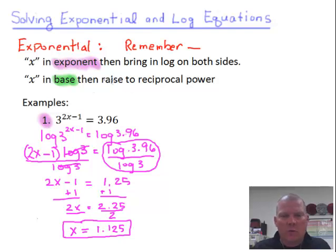Now, I want to teach you another way of working this problem out. And I think it might be a little shorter. But there's another method to solve when the x is in the exponent. If you remember back when we first started with logarithms and exponential functions, we took our exponential equation, 3 to the 2x minus 1 equals 3.96.